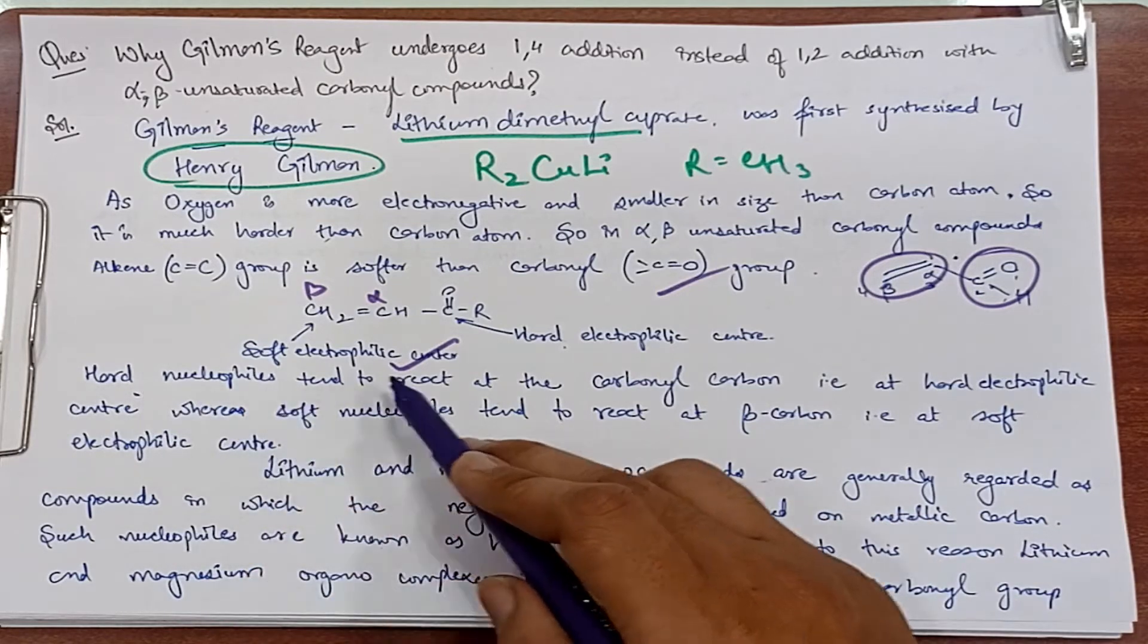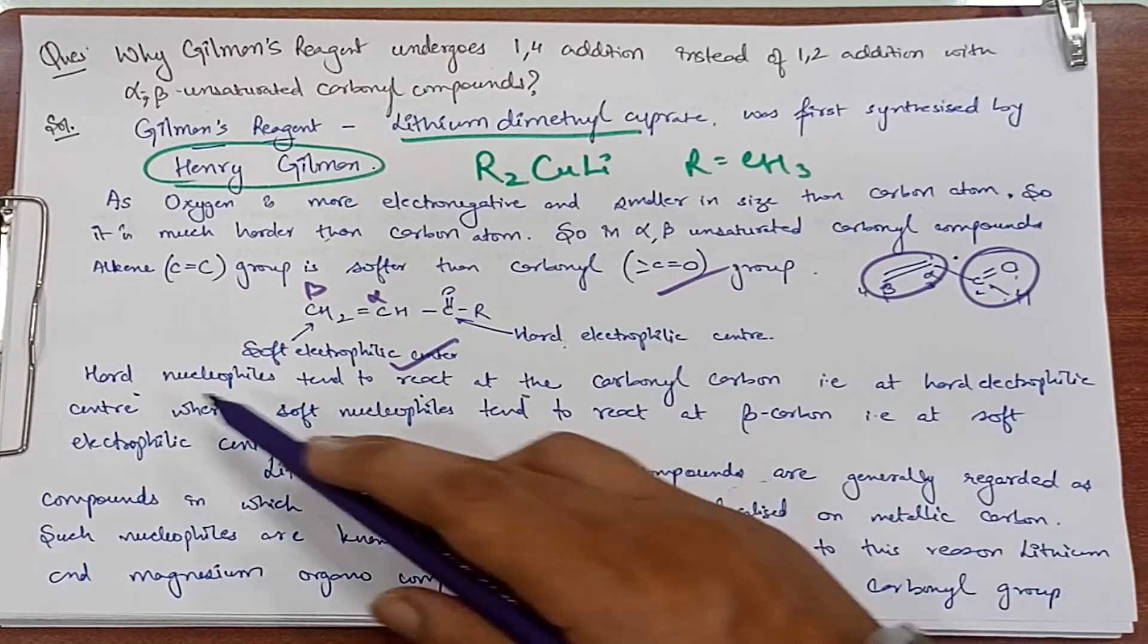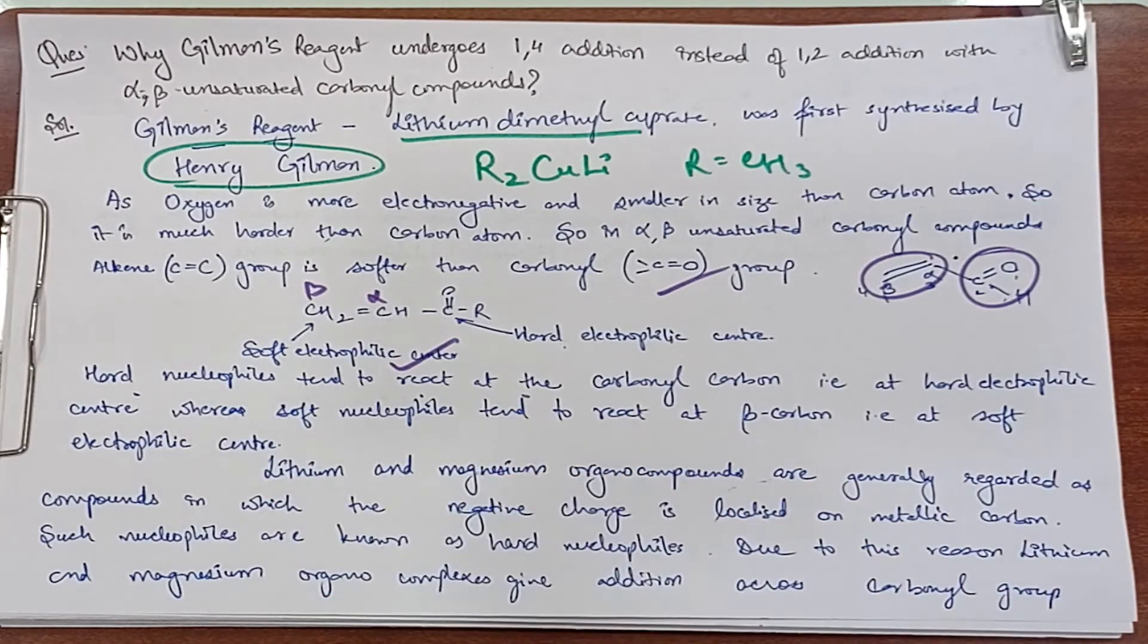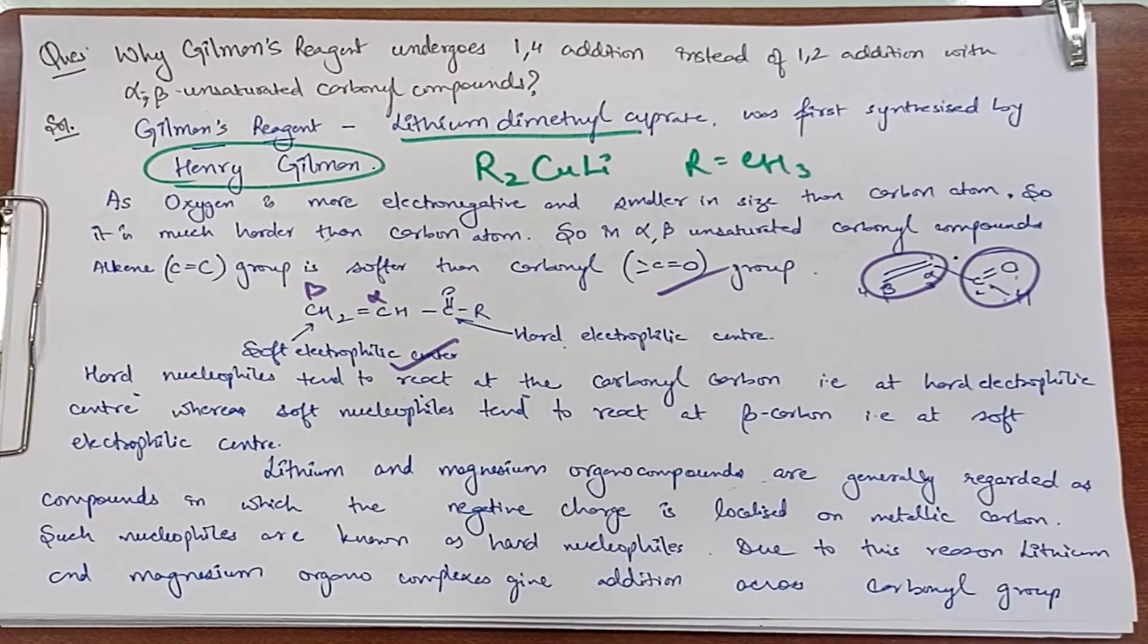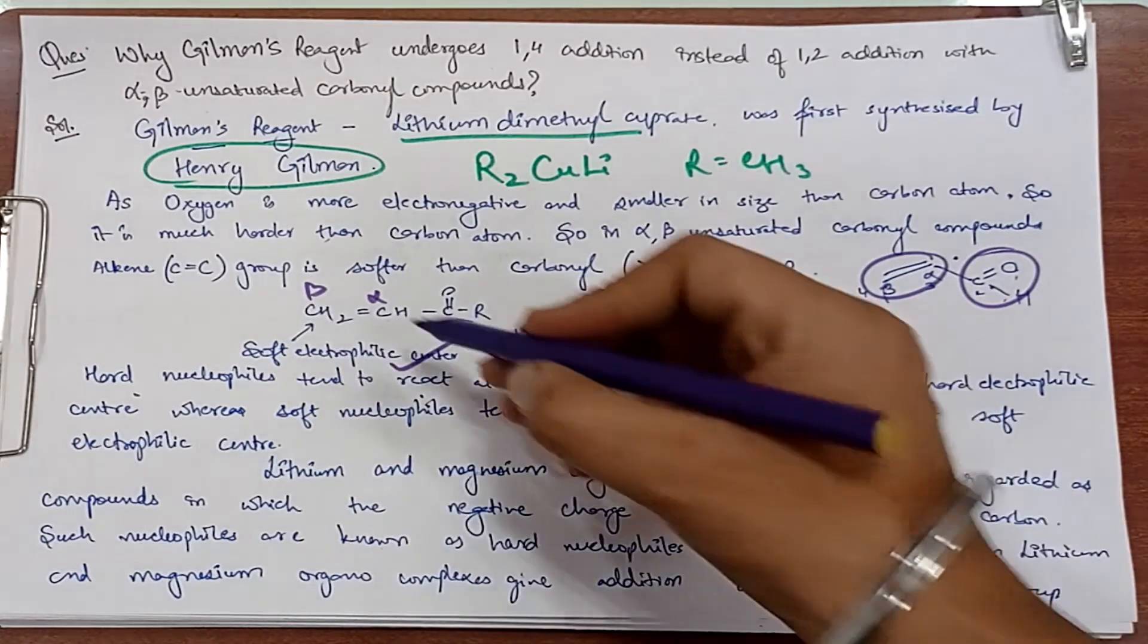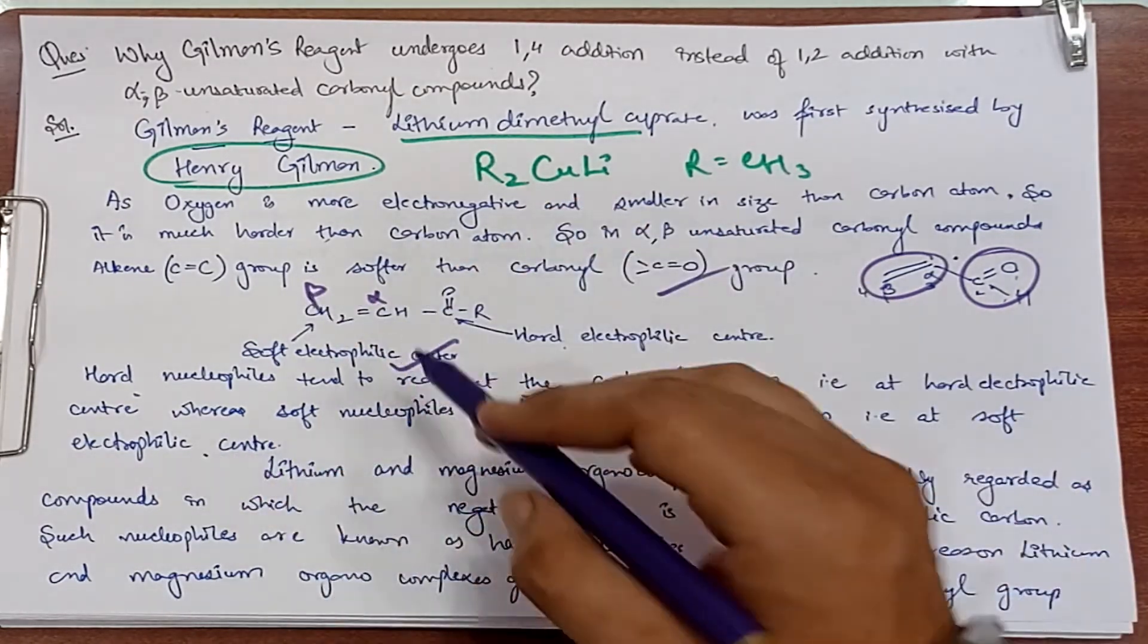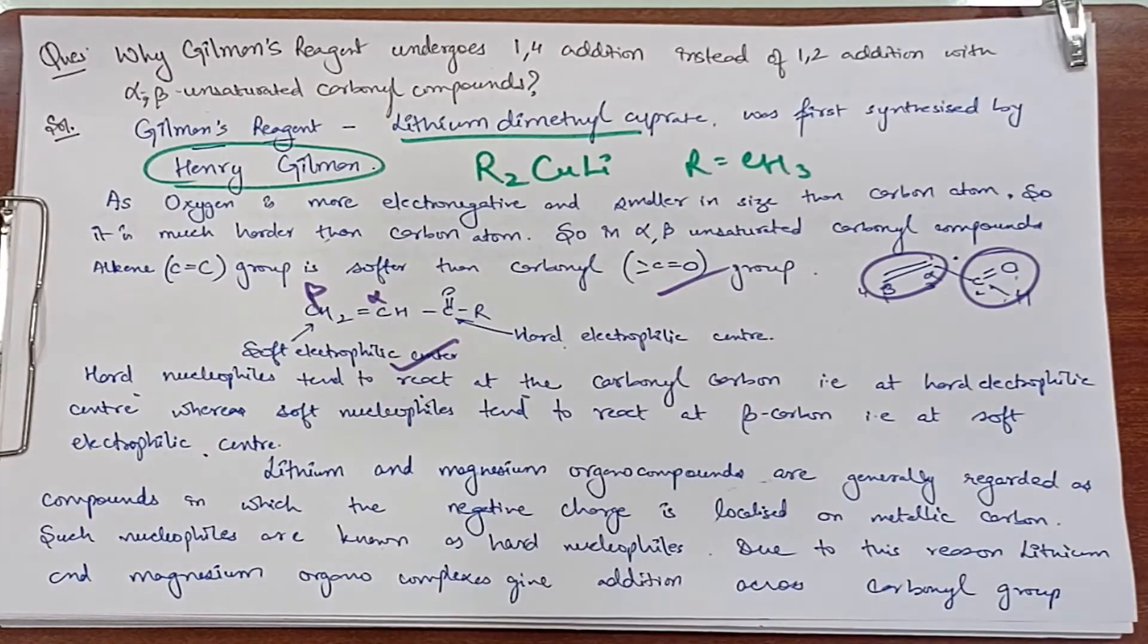Now hard nucleophiles tend to react at the carbonyl, i.e., at the hard electrophilic center. The hard nucleophiles act on carbonyl, that is hard electrophilic center. And soft nucleophiles act on beta-carbon, that is soft electrophilic center. Soft nucleophiles are soft and hard nucleophiles are hard center.